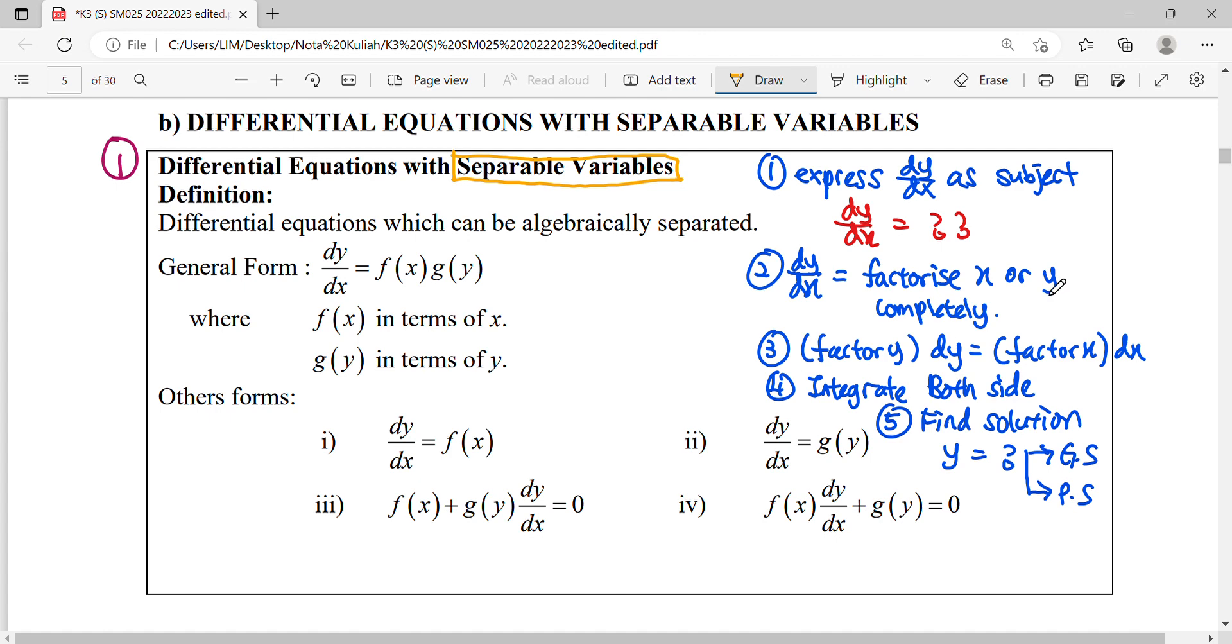So if you can factorize completely, this equation is using separable variables. So how to separate it? The factor of y, you will move to the left-hand side. Multiply with dy and then the dx will multiply to the right-hand side together with factor of x. Cross-multiplying. Then we start to integrate both sides in order to find out your solution.